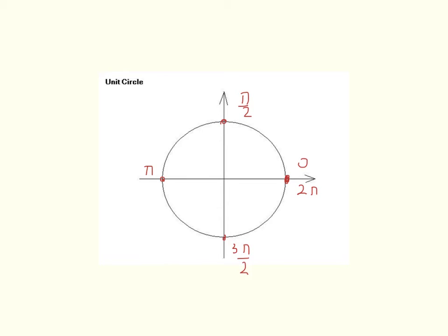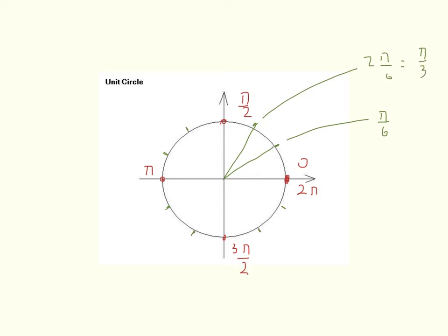We next split each quadrant into 3 equal parts, where each small angle — for example this angle here — will be 30 degrees or pi over 6. This angle here will be 2 pi over 6, which simplifies to pi over 3. And then 3 pi over 6, that's pi over 2, already there.